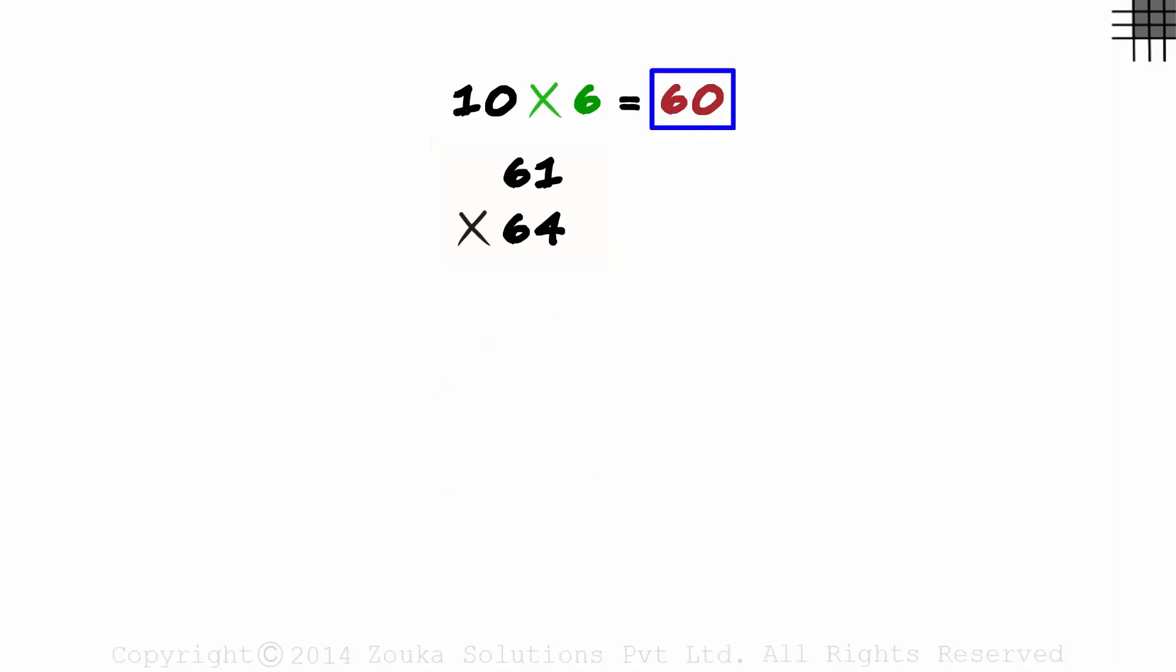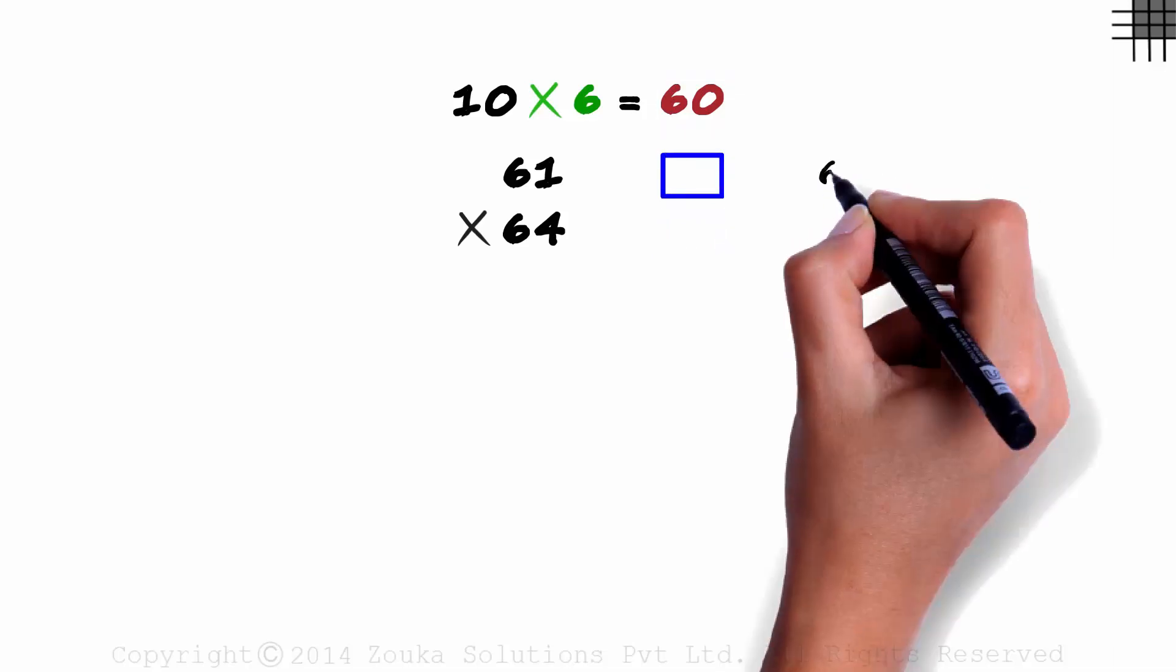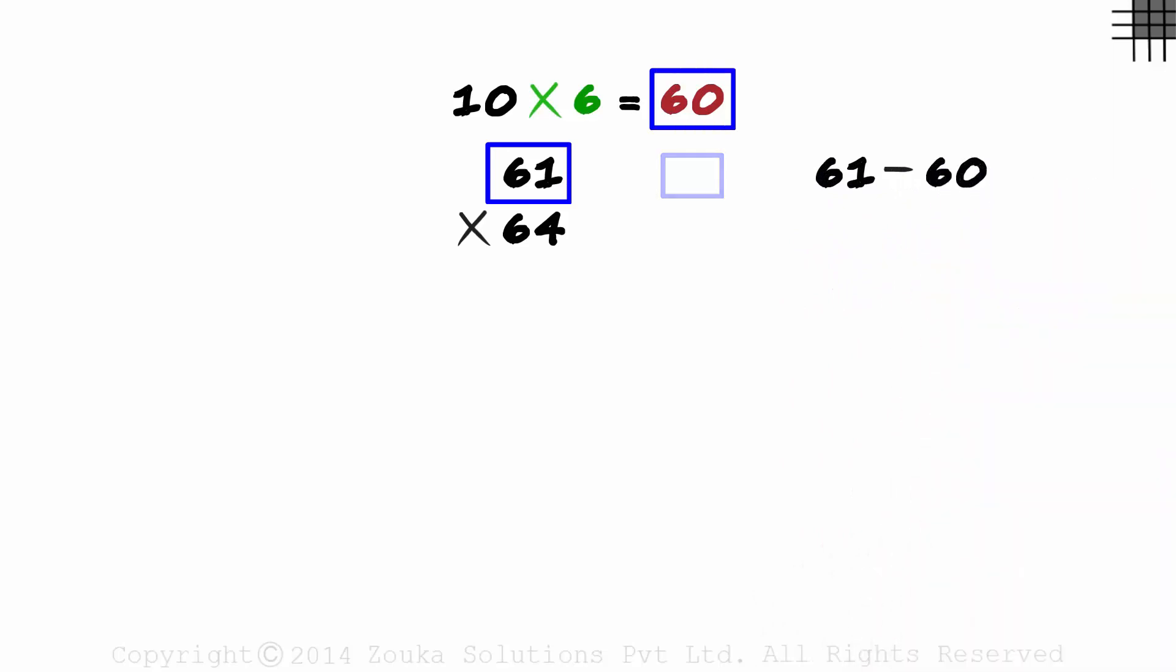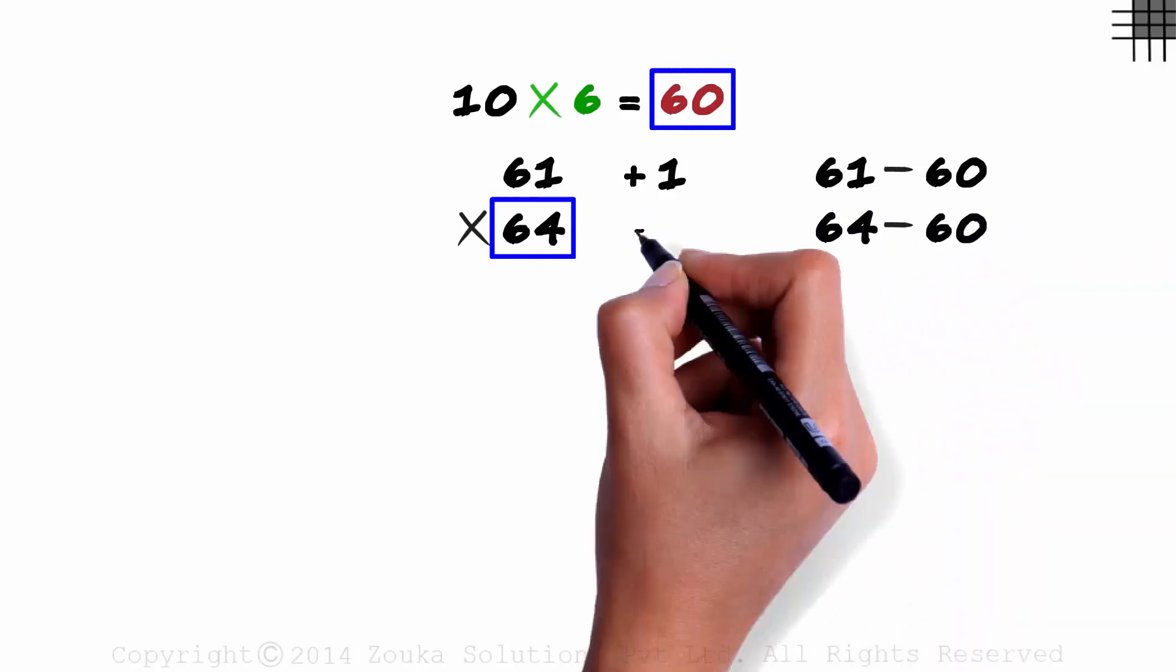The first step of choosing the base was the same. The second step of finding the deviation is also the same. We find the deviations of the numbers from the base which is 60. The deviation here will be 61 minus 60, which is 1, and the deviation here will be 64 minus 60, which is 4.